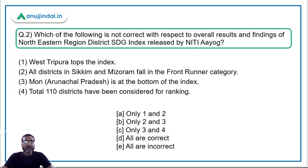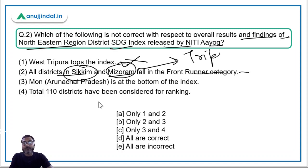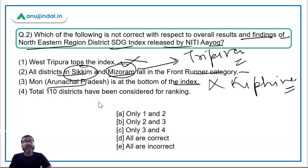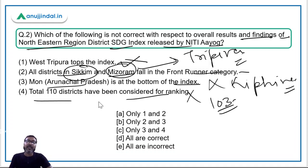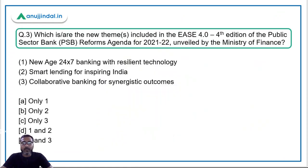Question two: which of the following is not correct with respect to the overall results and findings of the NER Districts SDG Index? Statement: West Tripura tops the index — incorrect, it is East Sikkim. All districts in Sikkim and Mizoram fall in the Front Runner category — incorrect, it is Sikkim and Tripura. Mon district in Arunachal Pradesh is at the bottom — incorrect, it is Kiphire from Nagaland. Total 110 districts considered — incorrect, it is 103. All statements are incorrect, so the correct answer is option E.